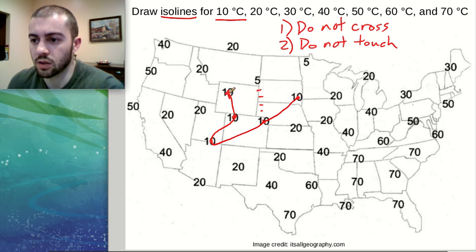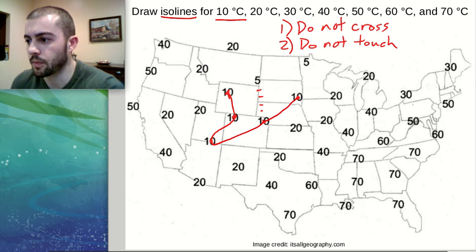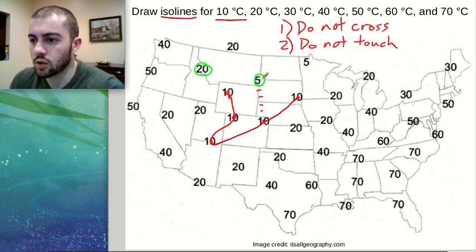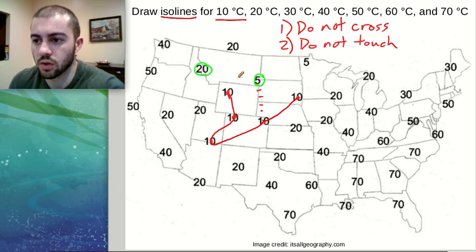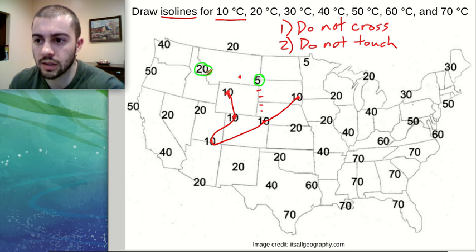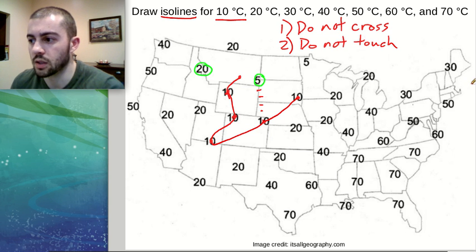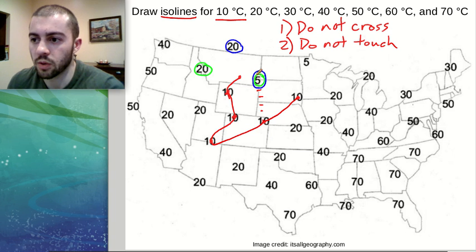Instead of connecting those two 10-degree marks directly, we can think of a way that makes more sense. If we tried to connect up through here, we'd be going in between 20 and 5. Does the number 10 lie between 20 and 5? It does. So we put a dot there — it should be closer to 5 than to 20 because 10 is only 5 units away from 5 but 10 units away from 20. So we connect through there, and we can see another gateway between 20 and 5, so we can safely go through there as well.